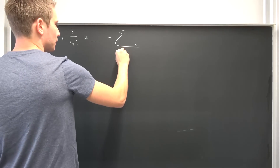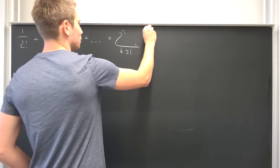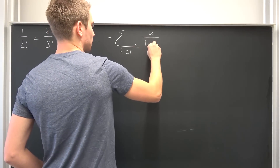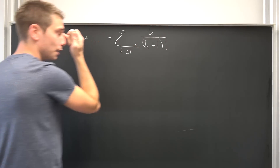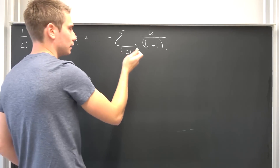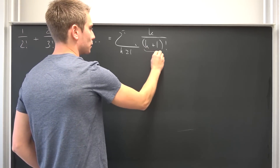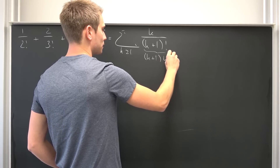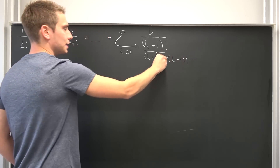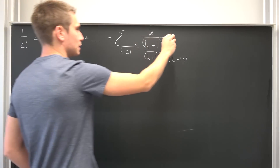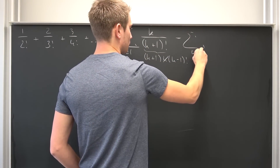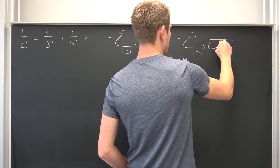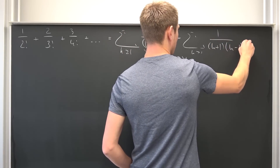We can start at 1, with K being greater or equal to 1. This is obviously K over K plus 1 factorial. Now, K plus 1 factorial is (K+1) times K times (K-1) factorial, meaning K and 1 over K are going to cancel out, and we are going to get this infinite series of 1 over (K+1) times (K-1) factorial.